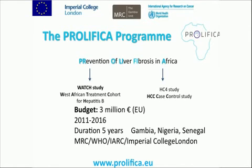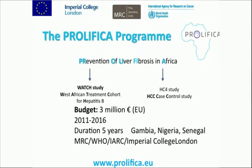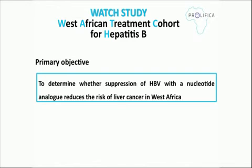Prolifica means Prevention of Liver Fibrosis in Africa. It was founded in 2011 by the European Union for a five-year duration with a budget of 3 million euros. The project takes place in the Gambia, Nigeria, and Senegal — in West Africa — in collaboration with MRC, WHO, and Imperial College. This is a comprehensive program with two main studies: the WATCH study — West African Treatment Cohort for Hepatitis B — and an HCC case-control study.